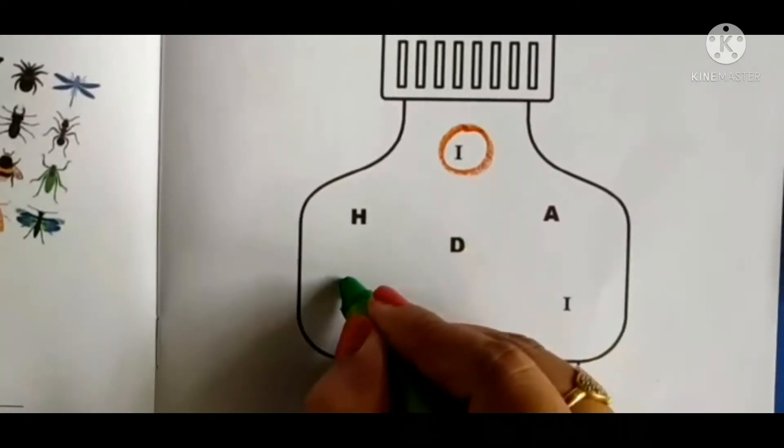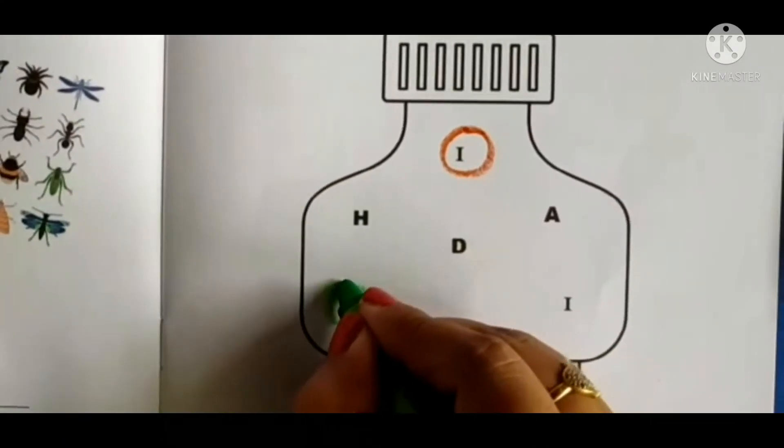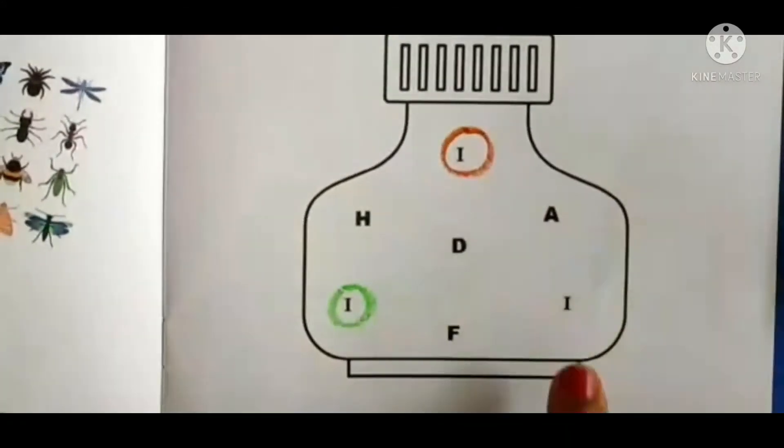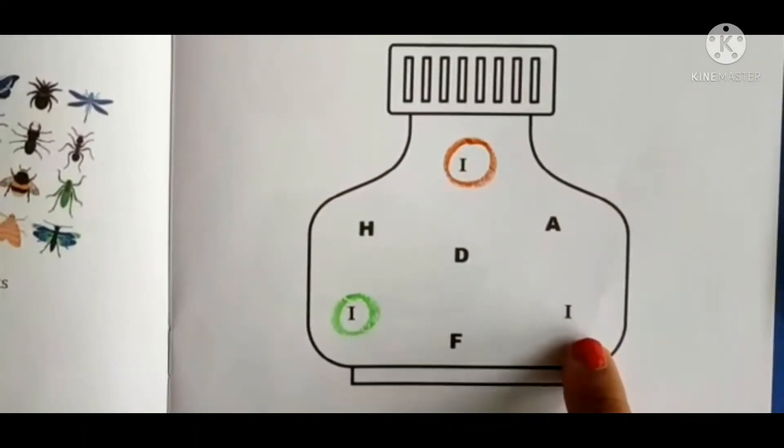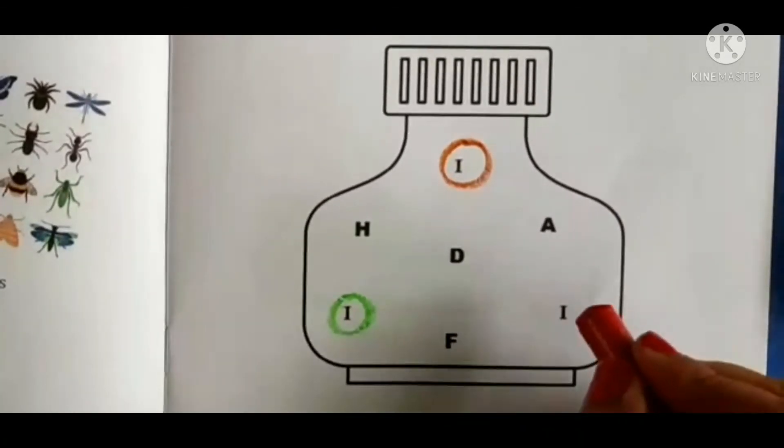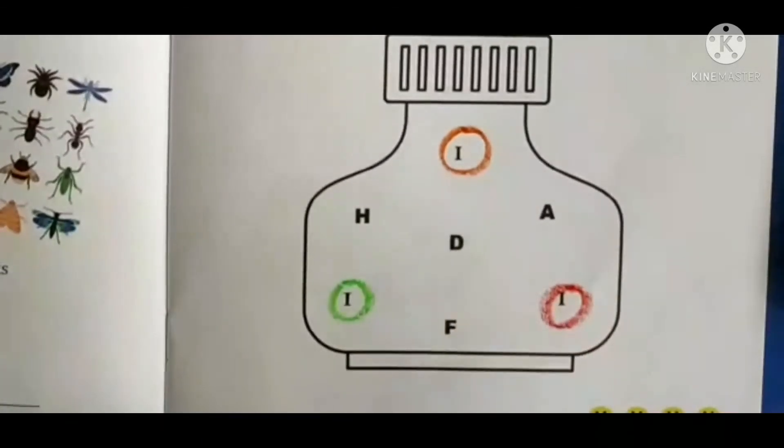Again we will circle letter I. Aur kahan par letter I hai? Here. Here is also letter I given. So we will circle letter I.